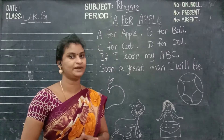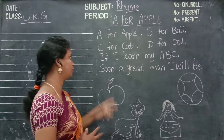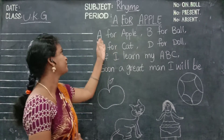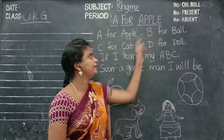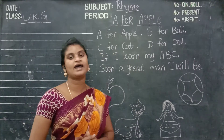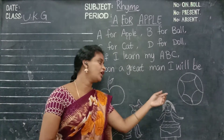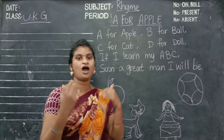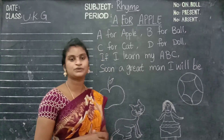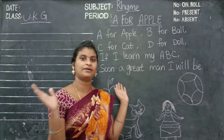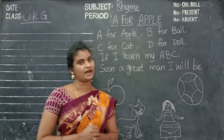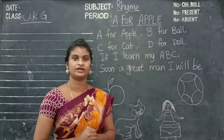Once again, look at the board. A for apple, B for ball, C for cat, D for doll. If I learn my A, B, C, soon a great man I will be. The children will practice them. Thank you.